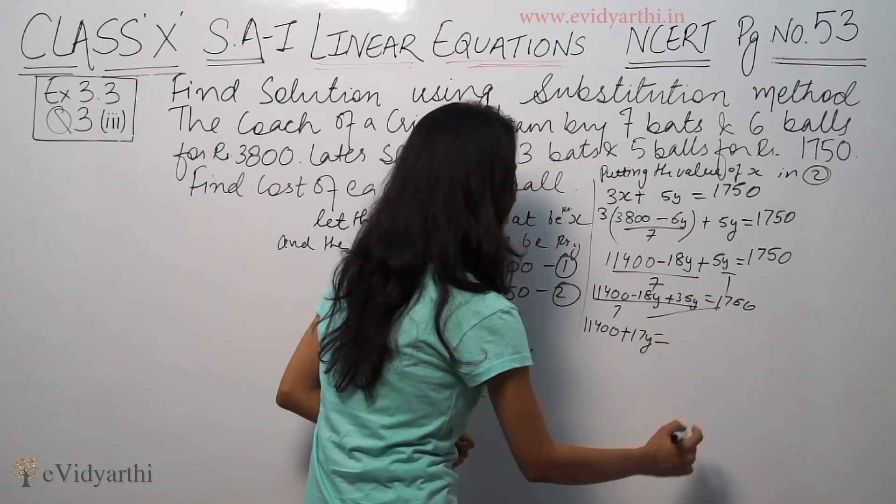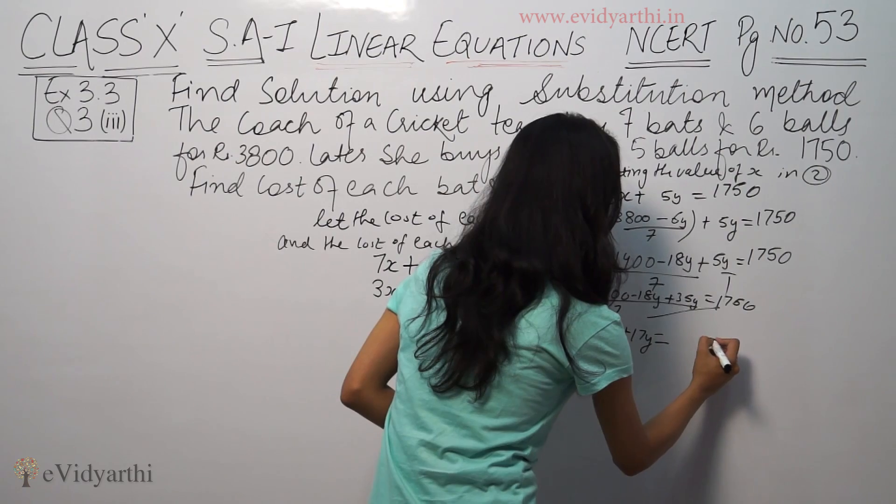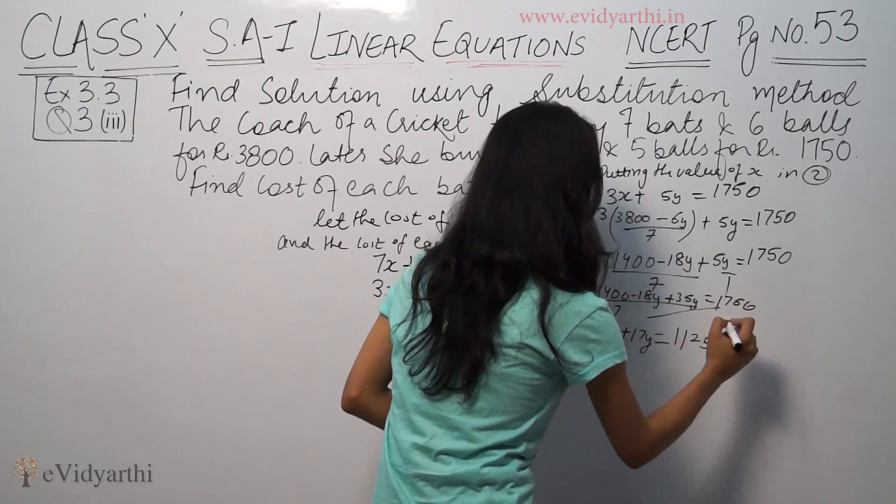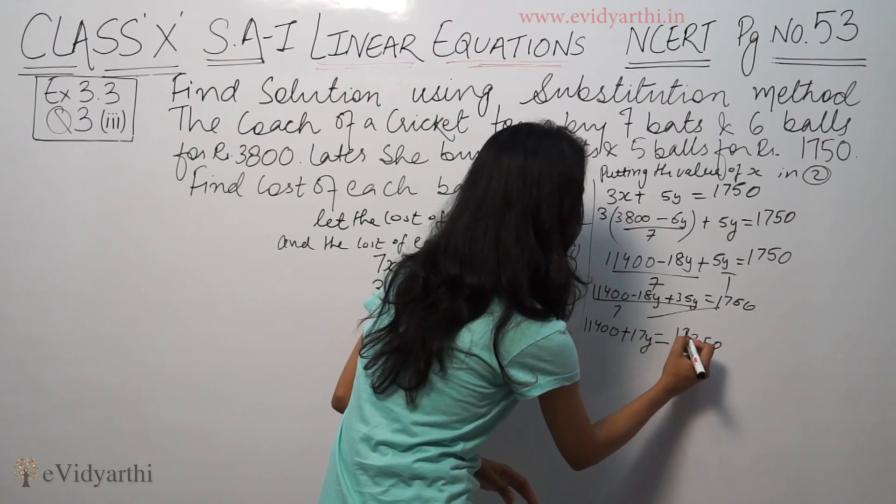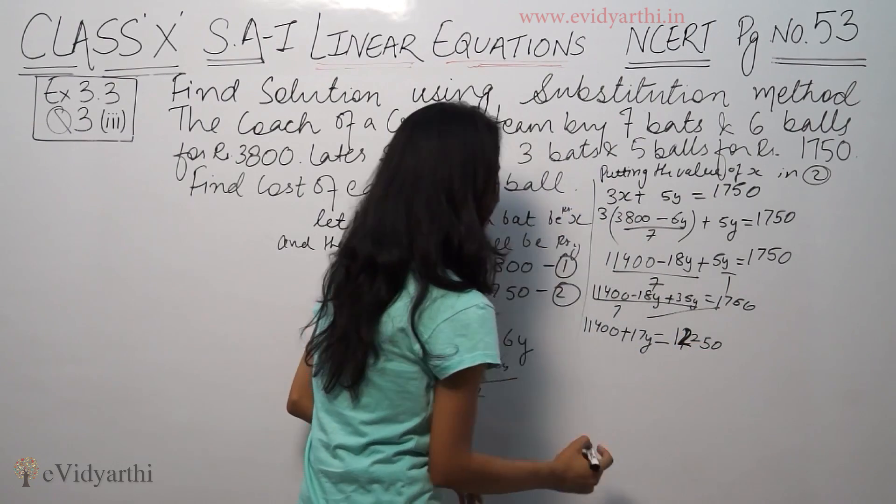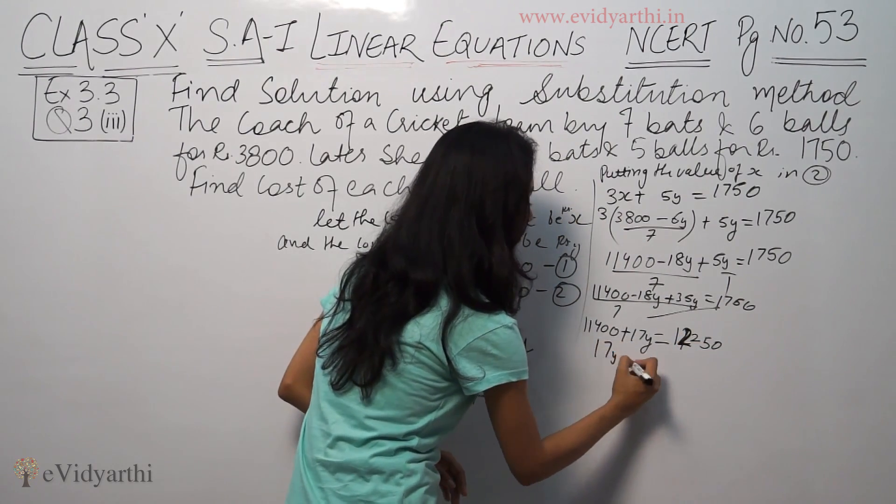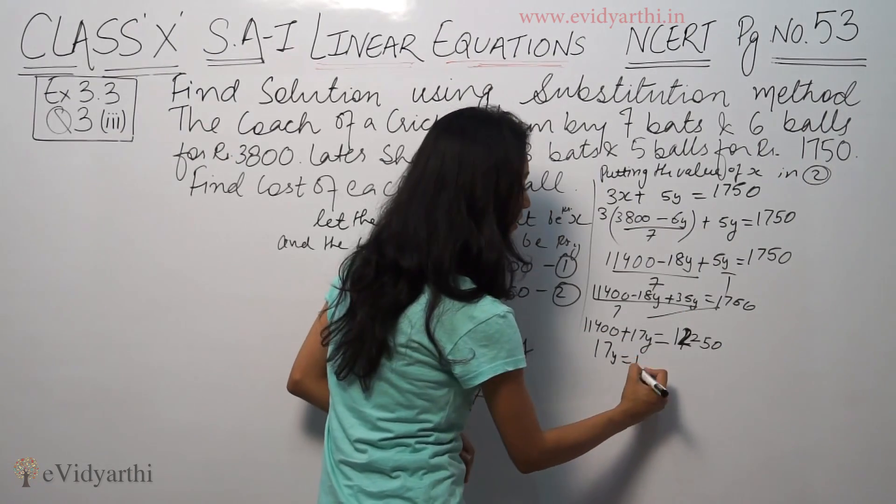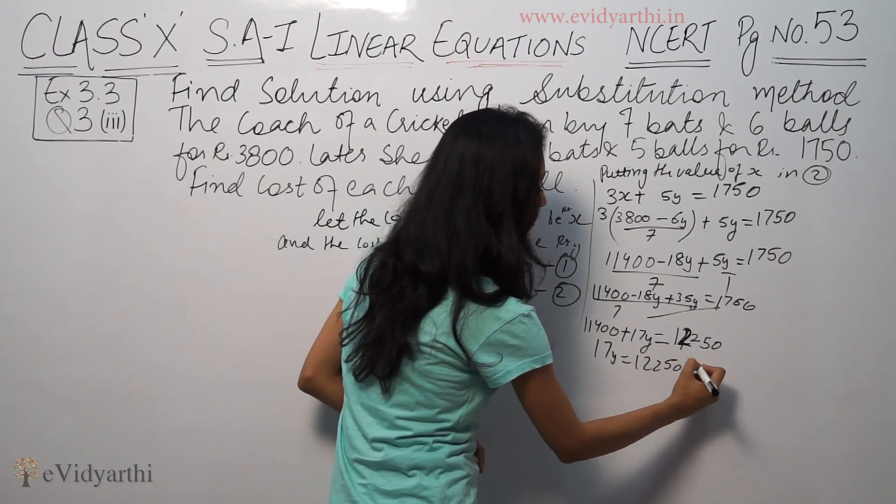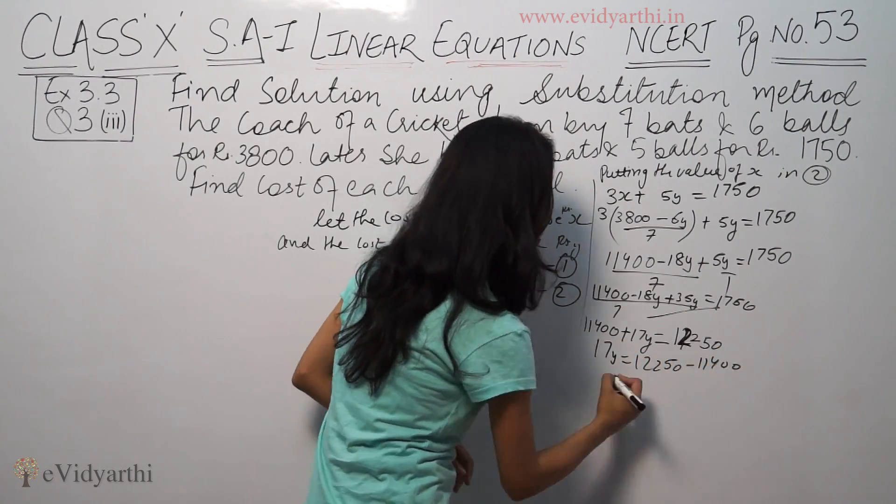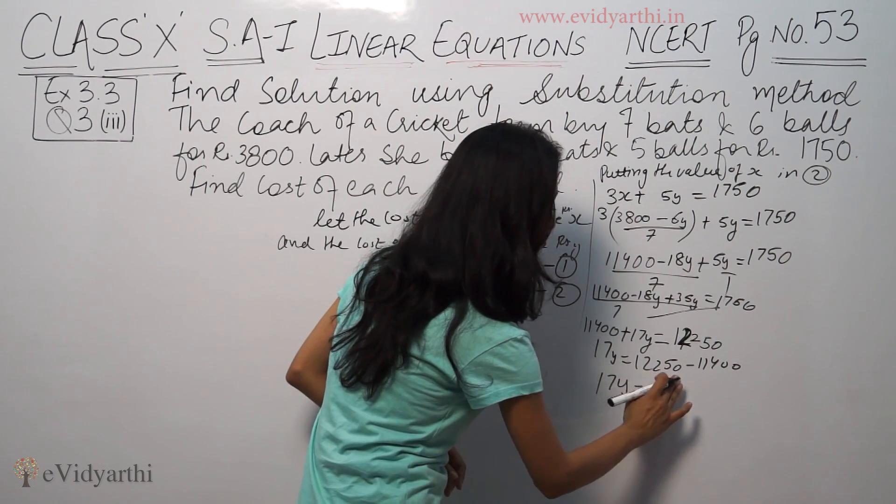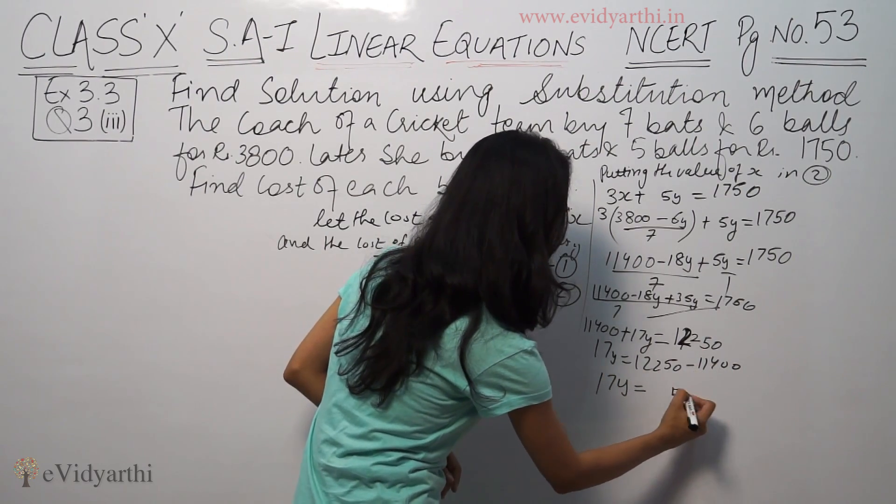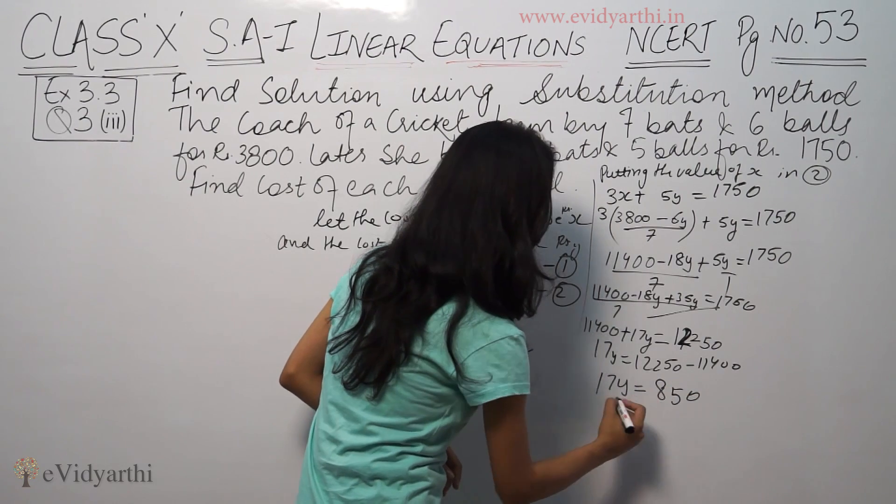1750 times 7 is 12250. So 17y equals 12250 minus 11400. 17y equals 850.